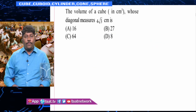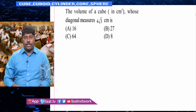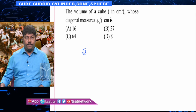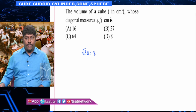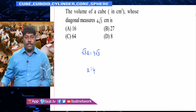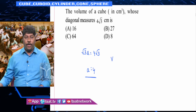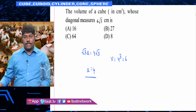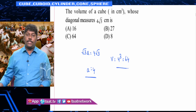The volume of the cube whose diagonal is 4√3: diagonal = √3·a = 4√3, so a = 4. Volume = a³ = 4³ = 64 cm³.